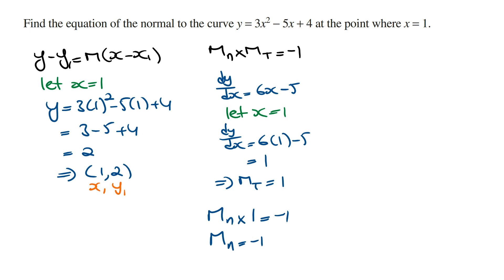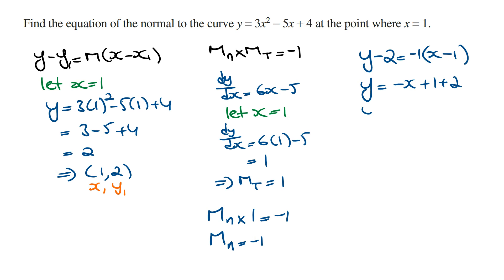Now that we have the gradient of this line and we have the point, we sub this into the general rule of the straight line and solve for y. Doing this we get y minus y1, which is y minus 2, is equal to m, which is minus 1, times x minus x1, which is x minus 1. Solving for y we get y is equal to minus x plus 1 plus 2, so y is going to equal minus x plus 3. And so the equation of the normal line to the curve at the point where x is equal to 1 is y equals minus x plus 3.